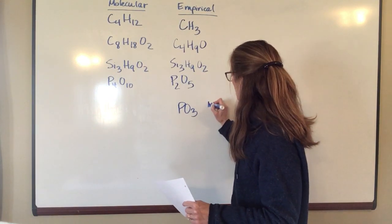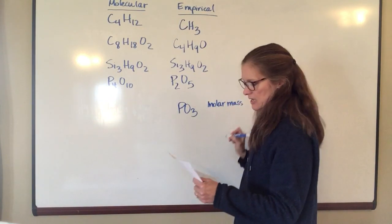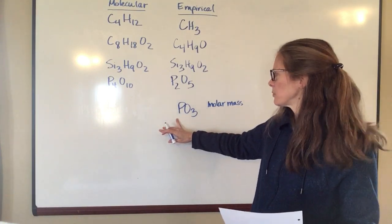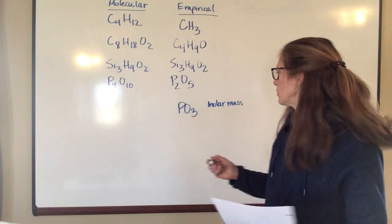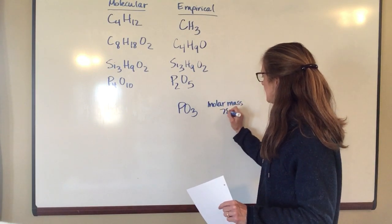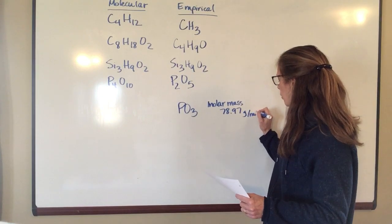Well the molar mass for this, if you look at your periodic table, phosphorus is in the neighborhood of 31 if I remember correctly. And then each oxygen is 16 and so when you add that together you're going to have a molar mass of 78.97 grams for every one mole.